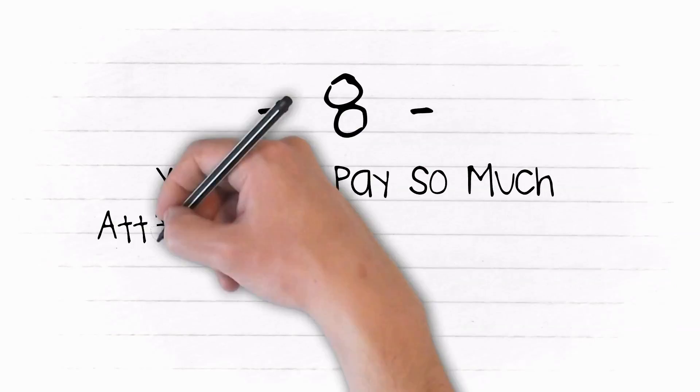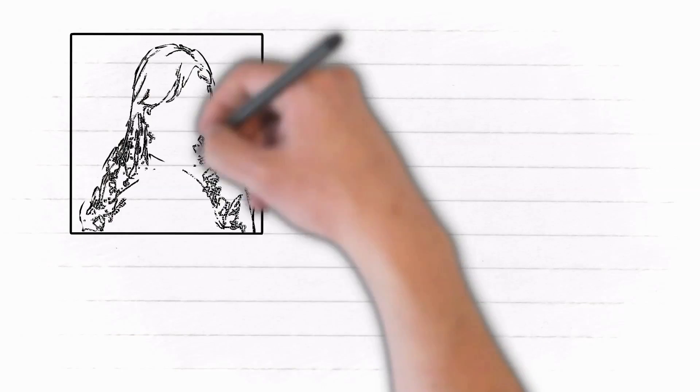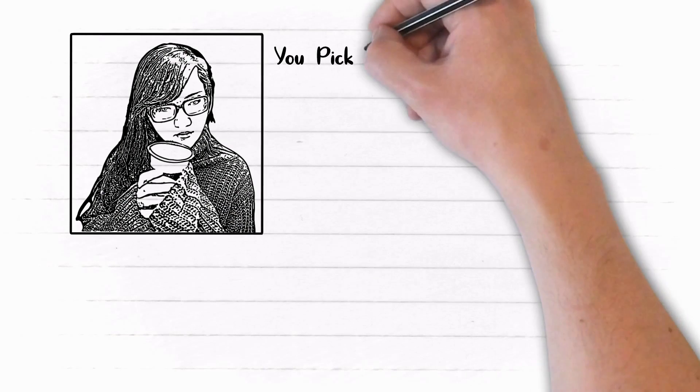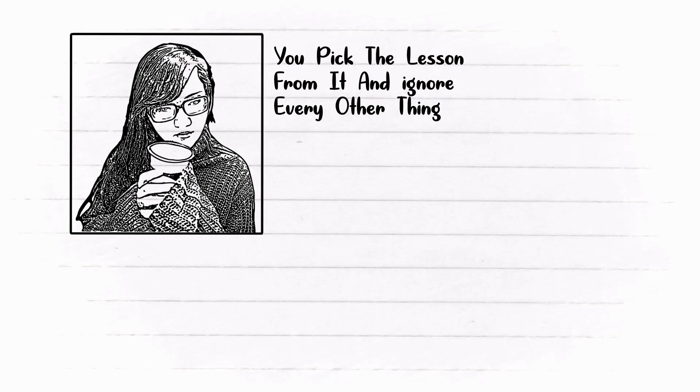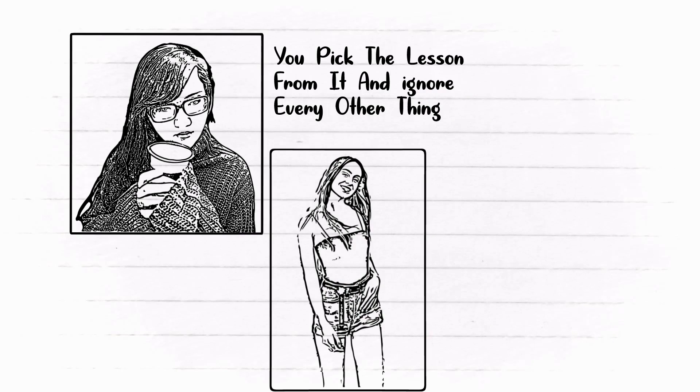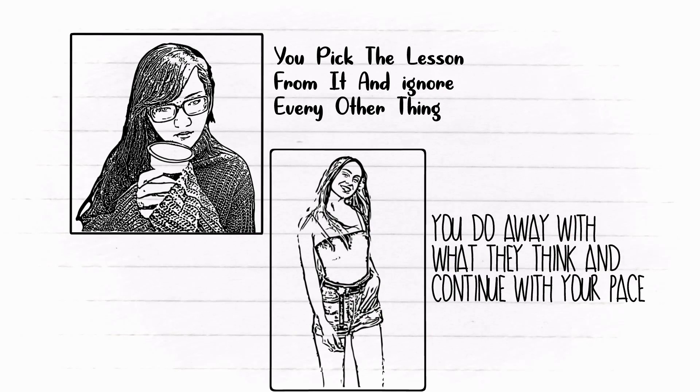8. You don't pay so much attention to what people say. You are fully aware of your strengths and flaws. When people try to criticize you so much for your mistakes, you pick the lesson from it and ignore every other thing. When people try to subject you under pressure or make you feel you are performing below par, you do away with what they think and continue with your pace, hence you are convinced you are on the right track.